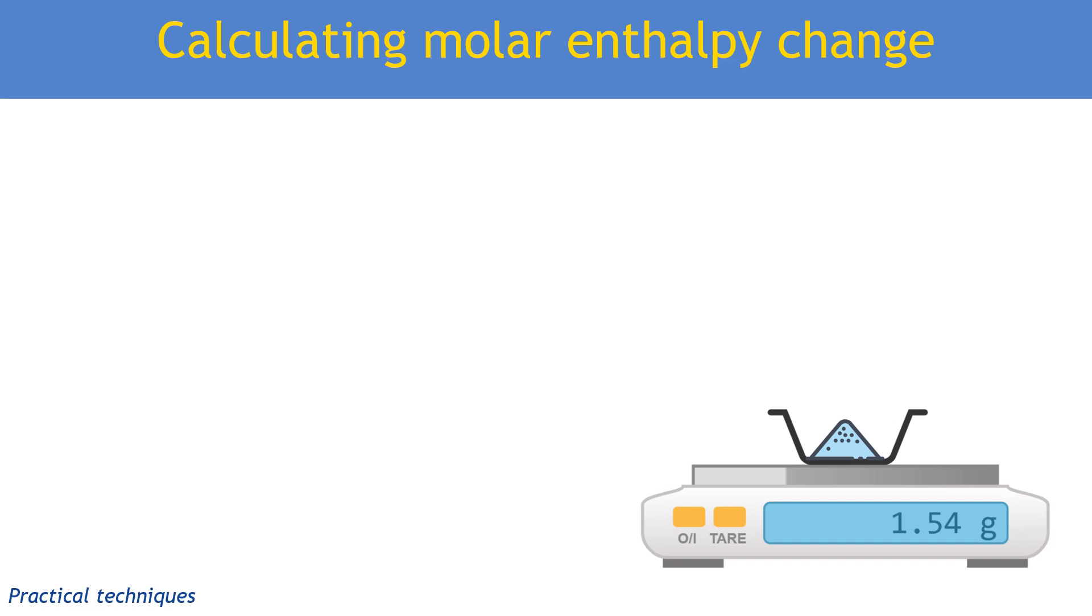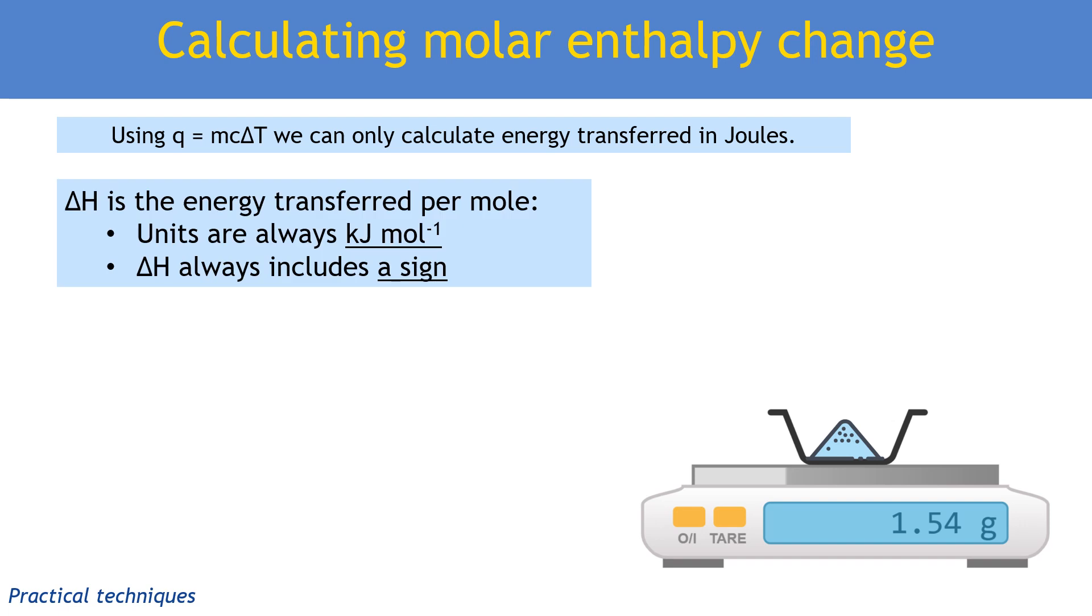The specific heat capacity equation q equals mc delta T only allows us to measure the absolute value of energy transferred in a chemical reaction, usually measured in joules. Molar enthalpy change, what we call delta H, shows the energy released or absorbed by a chemical reaction per mole. The units are always kilojoules per mole, and enthalpy change always includes a sign, plus or minus.